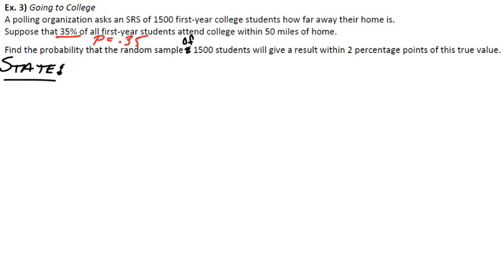Well, we know the true proportion, the true P is 0.35, they give us that. And we'd like to land within two percentage points of that. So 0.35, if we go plus or minus 0.02, that means we'd like to land at most 0.37, and at least 0.33, so somewhere in that interval.